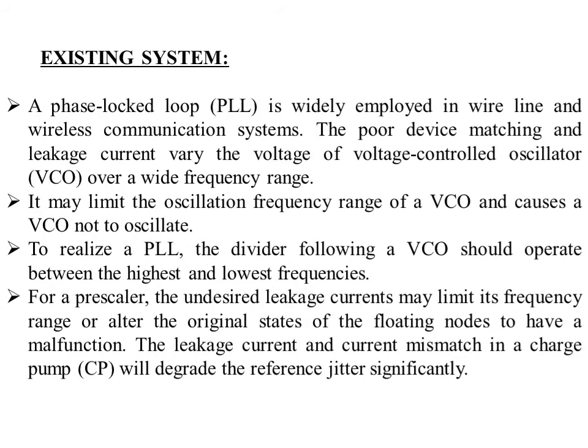This is the existing system. A phase-locked loop is widely employed in wireline and wireless communication. The existing system is an analog system which uses a VCO for voltage control operation. This particular VCO cannot oscillate across all ranges of frequencies, and the frequency range provided by the VCO is also limited. For a prescaler, undesired leakage current may limit its frequency range or alter the original state of the floating nodes, causing a malfunction.